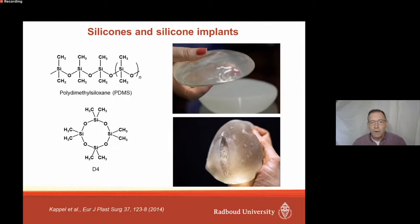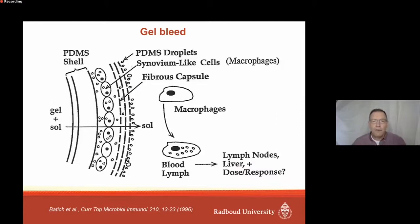In addition to D4, there's also D5 and D6, which are quite similar but just a little bit larger. It's already known for a long time that the molecules in an implant can actually bleed from the implant - they pass the PDMS shell - and then in the environment of the implant, they will form small micro droplets. These micro droplets can then be taken up by macrophages, or maintained as micro droplets, and distributed all through the body. There's quite some evidence that they can end up in very different tissues.